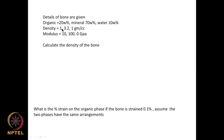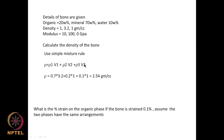Let us look at a problem. A bone contains 20 weight percent organic, 78 percent mineral, and 10 weight percent water. Densities: organic = 1 g/cc, mineral = 3.2 g/cc, water = 1 g/cc. Modulus: 10 GPa for organic, 100 GPa for mineral, 0 for water. Using the mixture rule: ρ = 0.7 × 3.2 + 0.2 × 1 + 0.1 × 1 = 2.54 grams per cc.